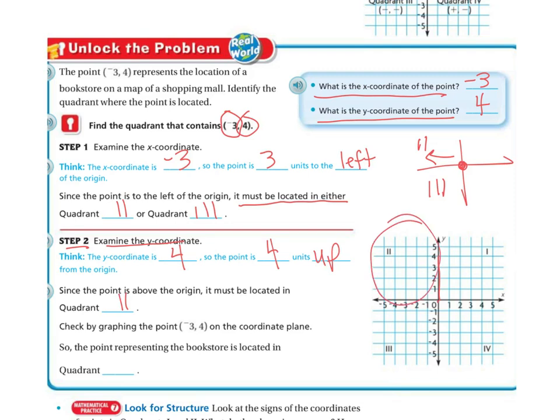Check the graph by graphing. We've got negative 3, positive 4, so my point's going to go right there. So the point representing the bookstore is located in quadrant 2.